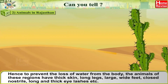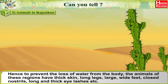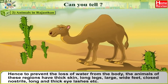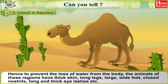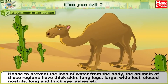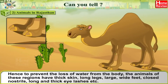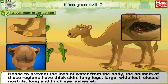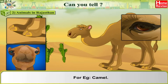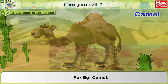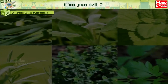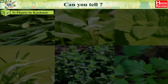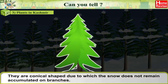Animals in Rajasthan: in desert regions there is scarcity of water, hence to prevent the loss of water from the body, the animals of these regions have thick skin, long legs, large wide feet, closed nostrils, long and thick eyelashes, etc. For example, camel.